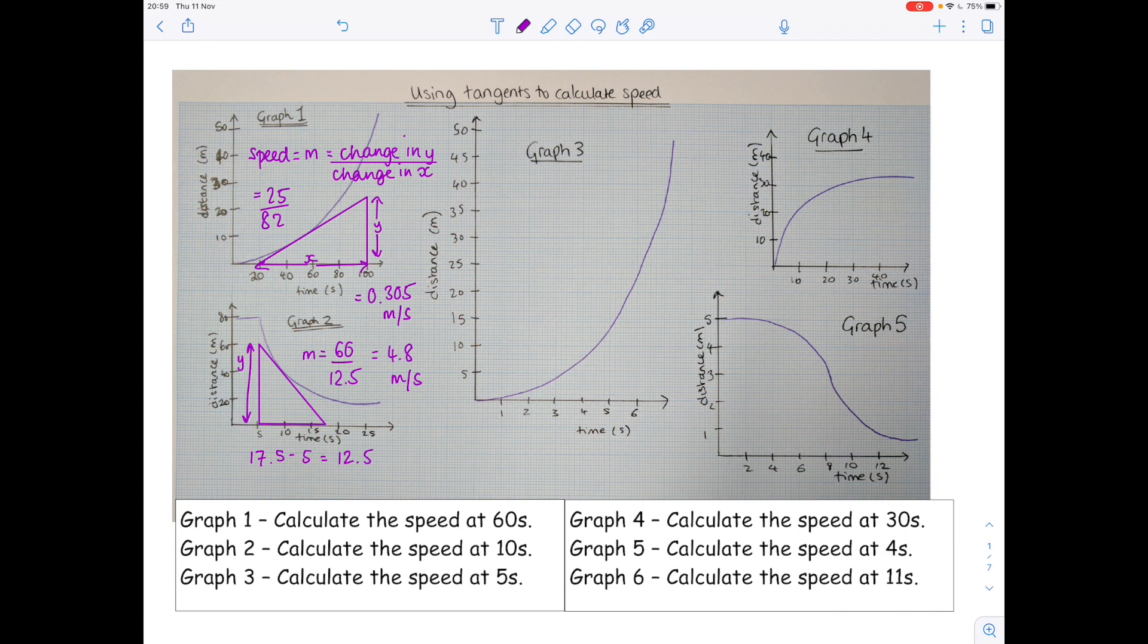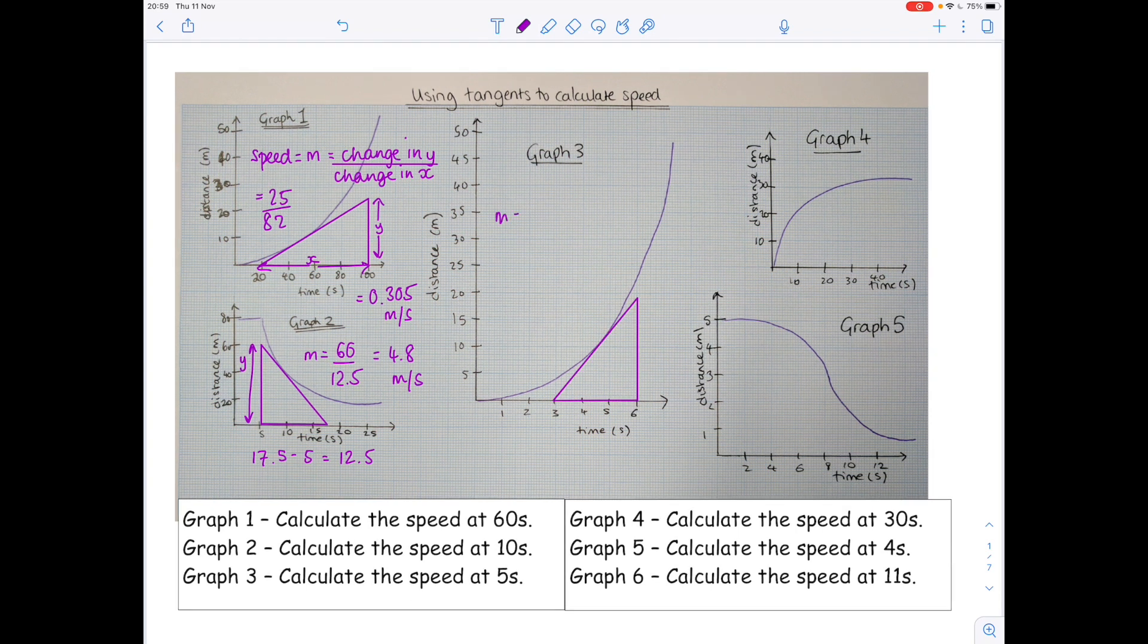What about graph three? We're after the speed at five seconds. So again what is the change in y this time? Well it's 19 over 3, so you get 6.33 meters per second.